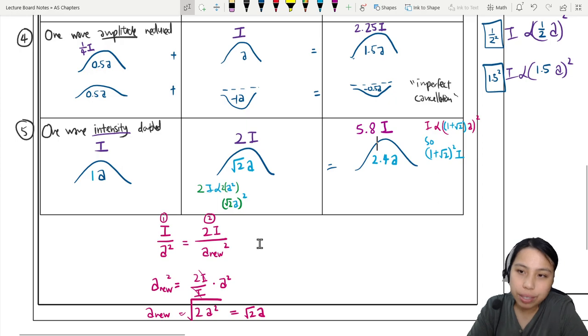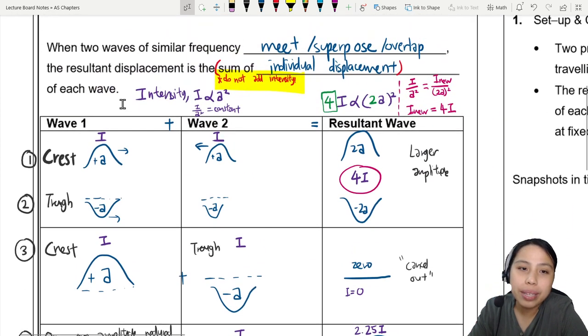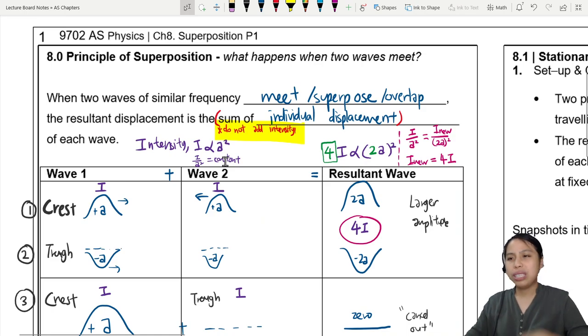So, this is your ratio practice. Remember, you are adding sum of displacement or amplitudes. You are not adding intensity. You have to always go back to the ratio if they involve intensity in the question. So, that's the introduction to adding waves. Next, we'll look at some case studies of different ways where waves can add. So, I'll see you in the next video.